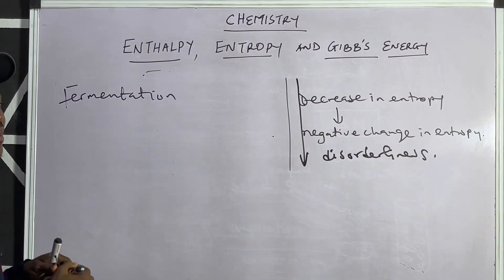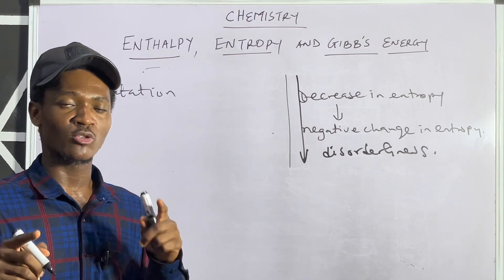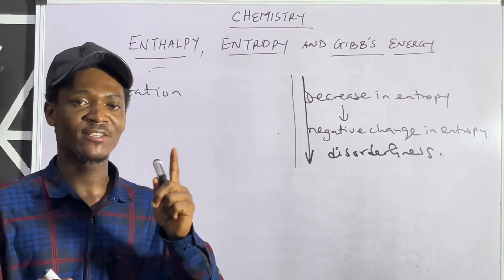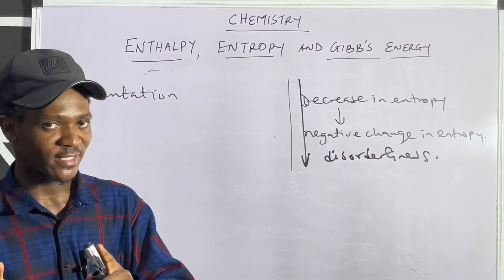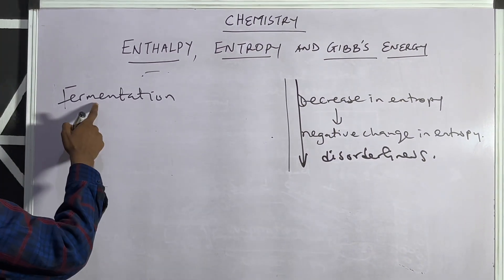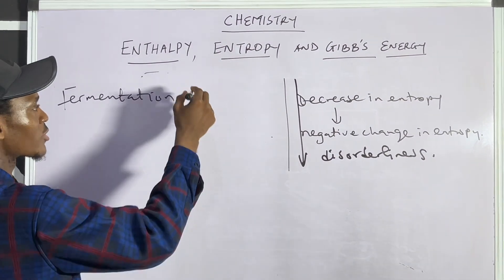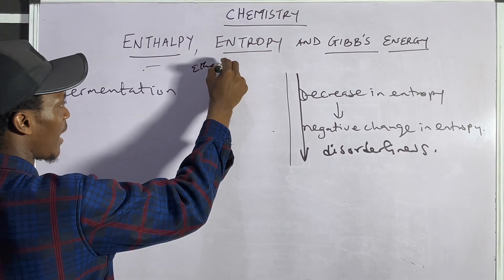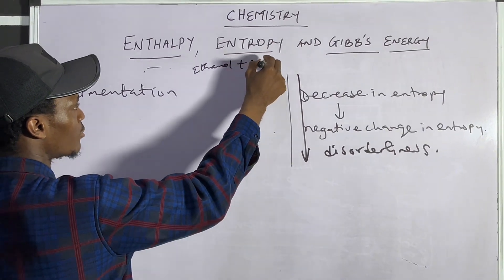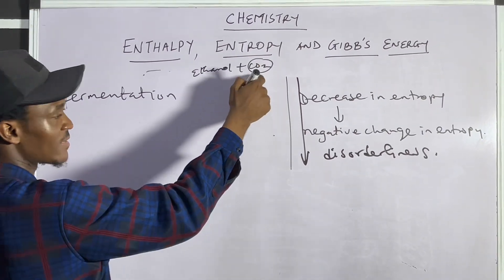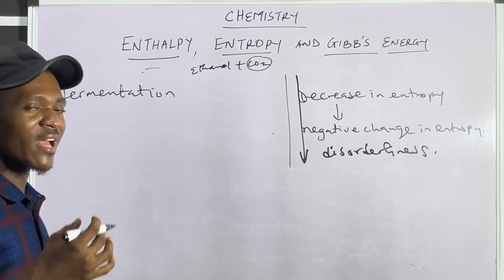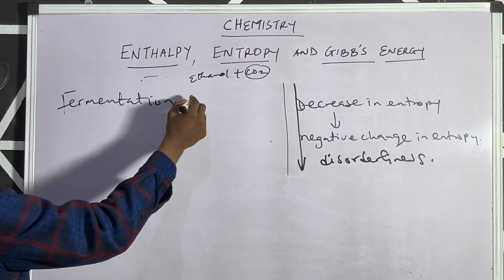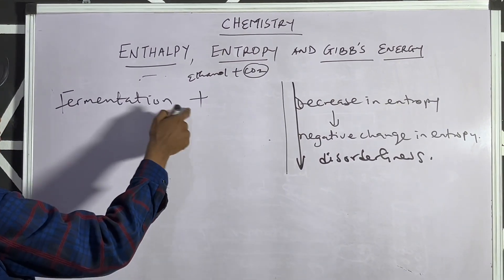Fermentation always produces two products: ethanol and CO2, meaning a gas is released in the process. Any reaction that involves the release of gas should be positive entropy. So fermentation is positive entropy.